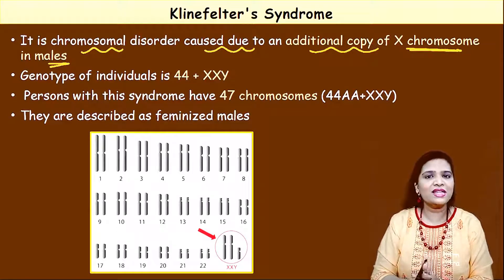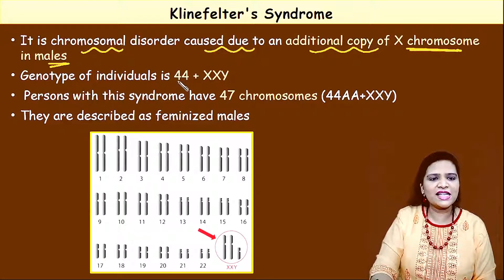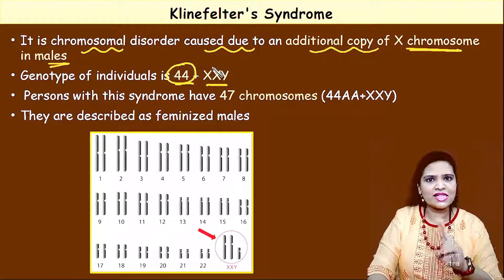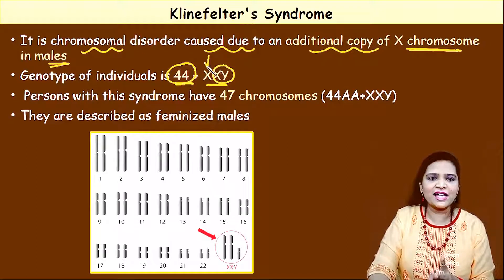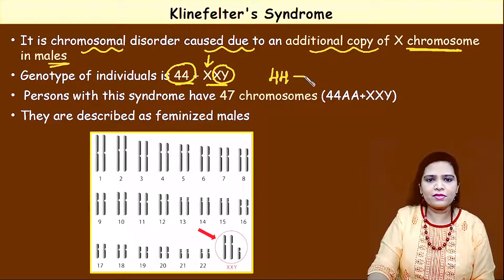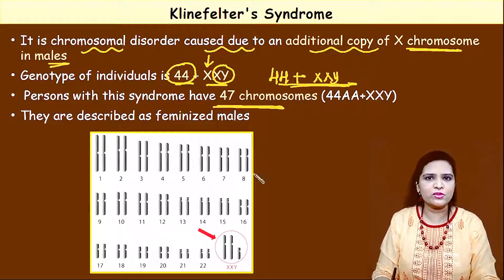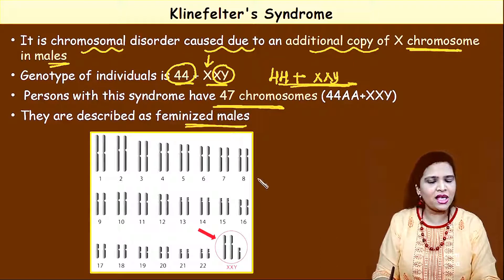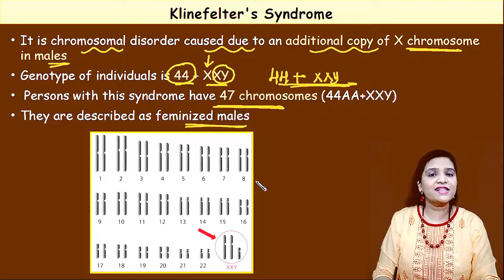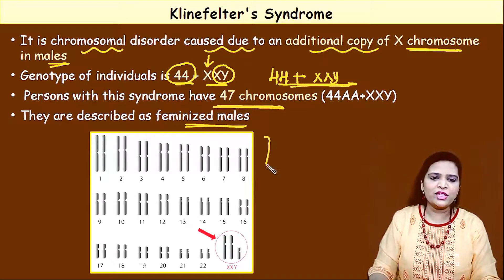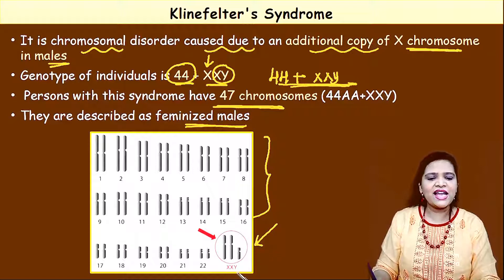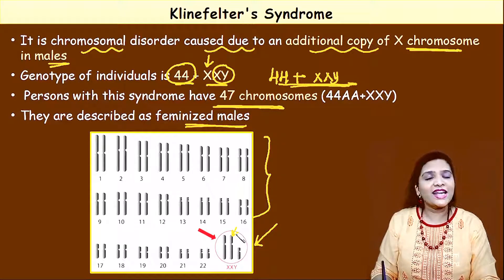A child will be born as male but will have one extra copy of the X chromosome. The genotype is 44 autosomes plus XXY — he is XY but has an additional X, giving 44 + XXY. Totally the child has 47 chromosomes. They are called feminized males — actually male but carrying one copy of the female X chromosome. Looking at the karyotype we can see the XXY condition with the extra X chromosome.